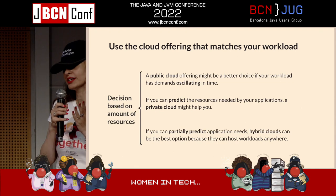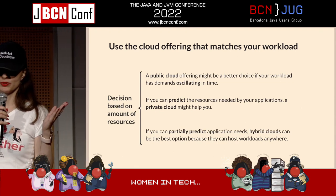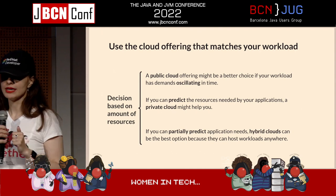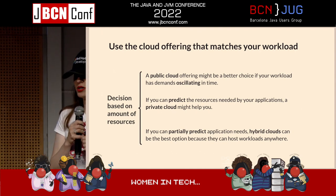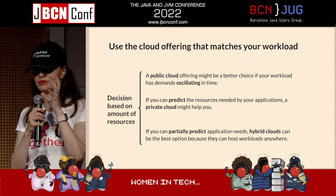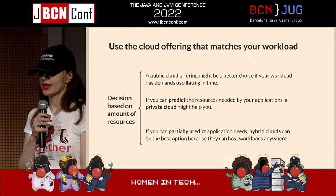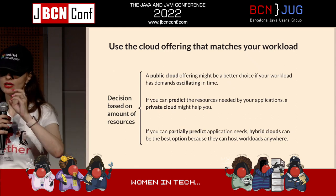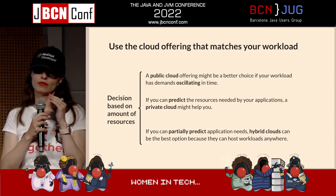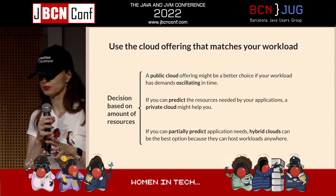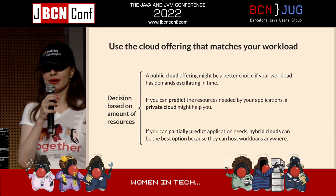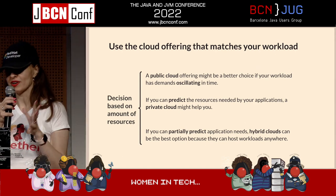When choosing a cloud offering, you should choose one that matches your workload. A public cloud offering is a better choice if your workloads have demands that oscillate in time — if you're not sure how your workload will behave over time, going public might be a good option. But if you can predict the resources needed, then going private can help as well. Private clouds are great for organizations really preoccupied with security and having a lot of things under control. And if you can partially predict what your application needs, hybrid clouds can be the best solution because they can host workloads anywhere.